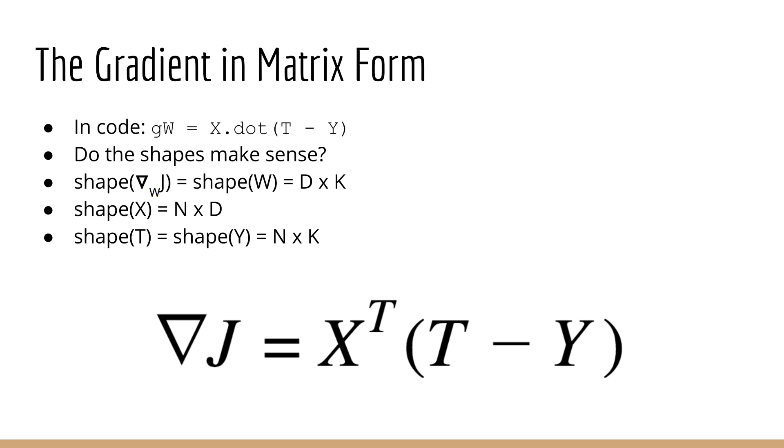Using the dot function, we can make our expression for the logistic regression gradient much simpler. It's just x transpose times t minus y. Now, technically speaking, this is not a dot product, but rather a matrix multiply. You can use the rules of matrix algebra to do a sanity check and make sure this works.